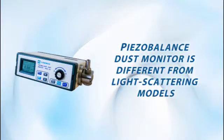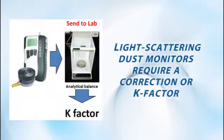The major difference is in how the 3521 measures particulates. Light-scattering monitors, including the Model 3443 from Canamax, require a k-factor to accurately measure mass concentration. A k-factor is a correction factor that is based on the density of the sampled material.